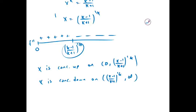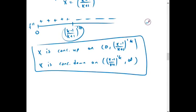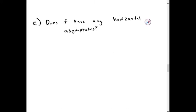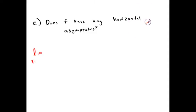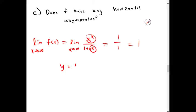And x is concave down on the interval from the inflection point to positive infinity. For c, we find if x has any horizontal asymptotes. So we take the limit as x approaches infinity of f of x. We don't even bother with negative infinity because it's not in our domain. And this is the limit as x approaches infinity of x to the k over 1 plus x to the k. And since both of these have the same degree, we just look at their coefficients, which are both 1. So we have horizontal asymptote at y equals 1.